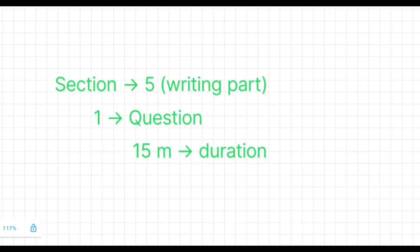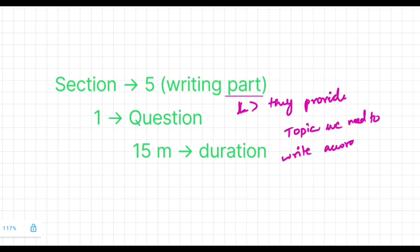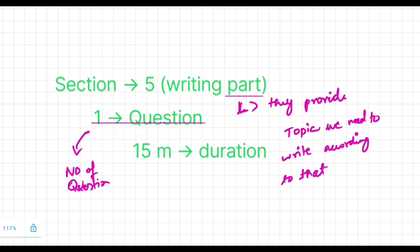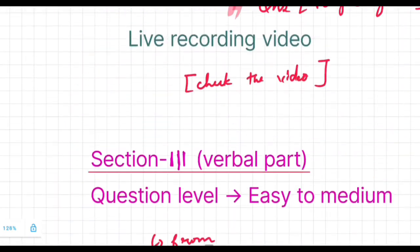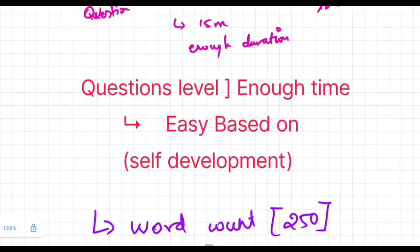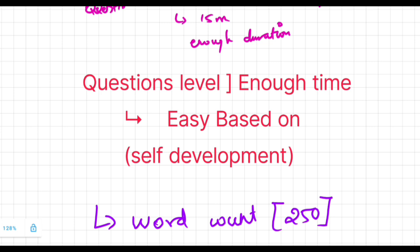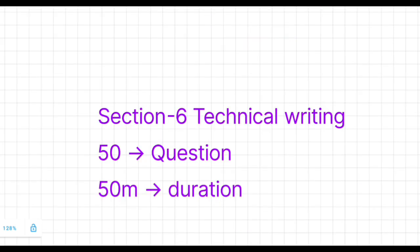Let us discuss Section 5, which is the Writing part. They will provide a topic and we have to write based on that. The number of questions is only one and the duration is 15 minutes, so you have enough time. A recent topic was based on self-development. You can write 220 to 250 words, giving real-life examples, conclusions, and real scenarios.